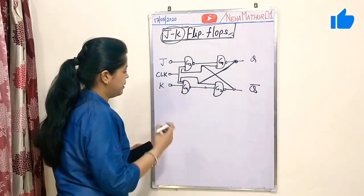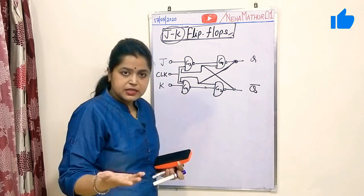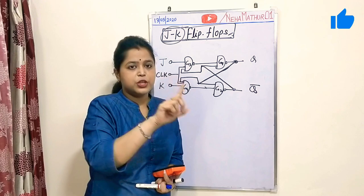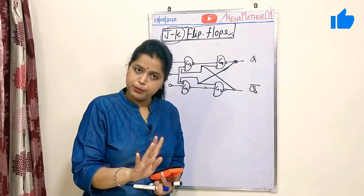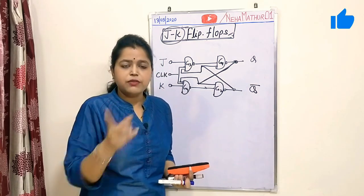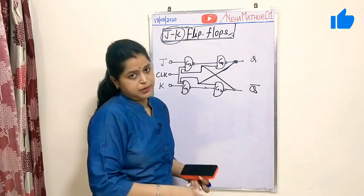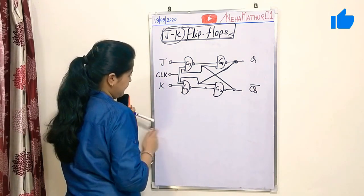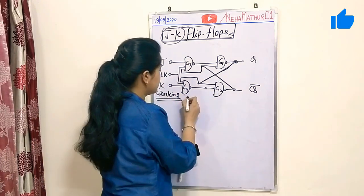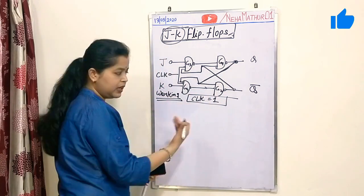Now let's look at the truth table and working of the JK flip-flop. There are four cases because we have two main inputs J and K, giving four possible binary combinations: 0,0 — 0,1 — 1,0 — and 1,1. We will discuss each combination individually, then draw the truth table. Remember, the circuit works when clock equals 1, so we will deal with each case when clock is equal to 1.